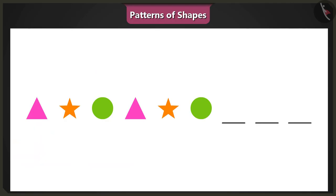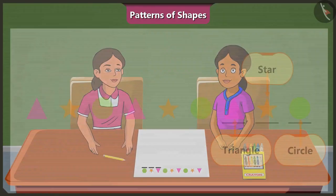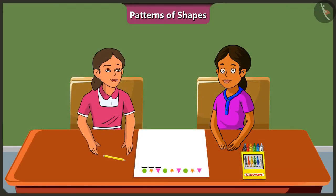Yes, so now please complete the pattern. In this pattern, next shape will be a pink triangle, then an orange star and then finally a green circle. Very good, Binni.